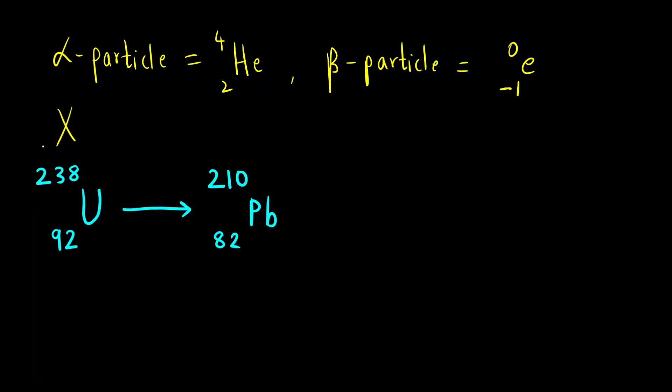Let us take an unknown element X with atomic mass A and atomic number Z. Suppose I remove a beta particle e⁻ with -1, 0. What we will get? A minus 0 is A, and Z minus of minus 1 will become Z plus 1. So what happens when we remove a beta particle? Atomic number Z increases by 1 unit and atomic mass is the same.